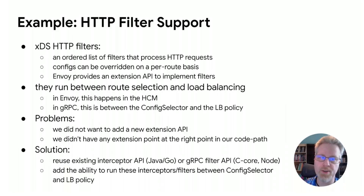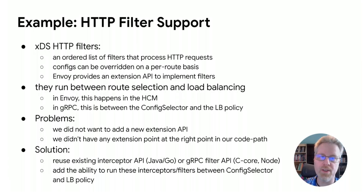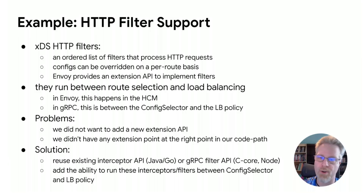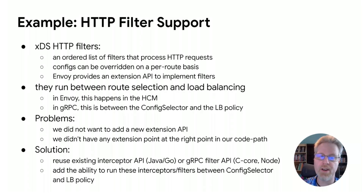Another feature that required creative solutions was XDS HTTP filter support, used for things like fault injection or RBAC authorization policies. XDS supports an ordered list of filters that process HTTP requests, each with its own config that can be overwritten on a per-route basis, and they run between route selection and load balancing. We didn't want to add a new extension API just for XDS, so we leveraged the existing interceptor API in Java and Go, or the filter API in C Core and Node. We also added the ability to run these interceptors or filters in between the config selector and the LBPolicy, which gave us the extension point we needed.